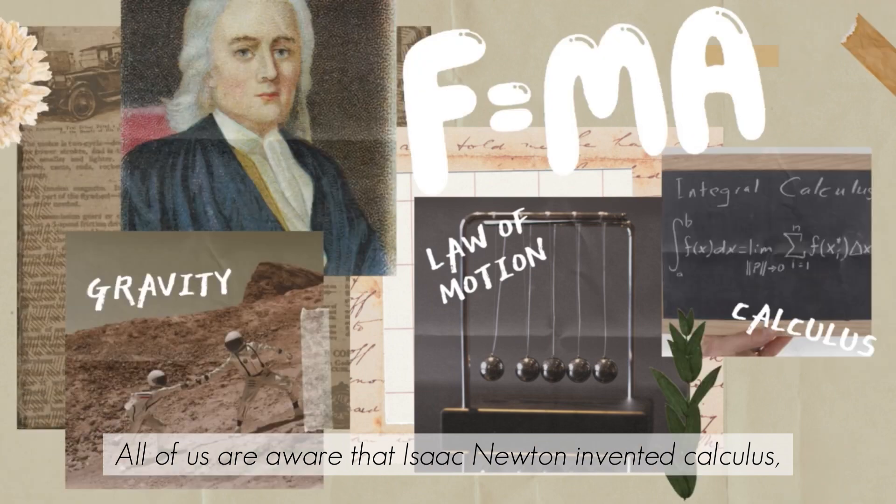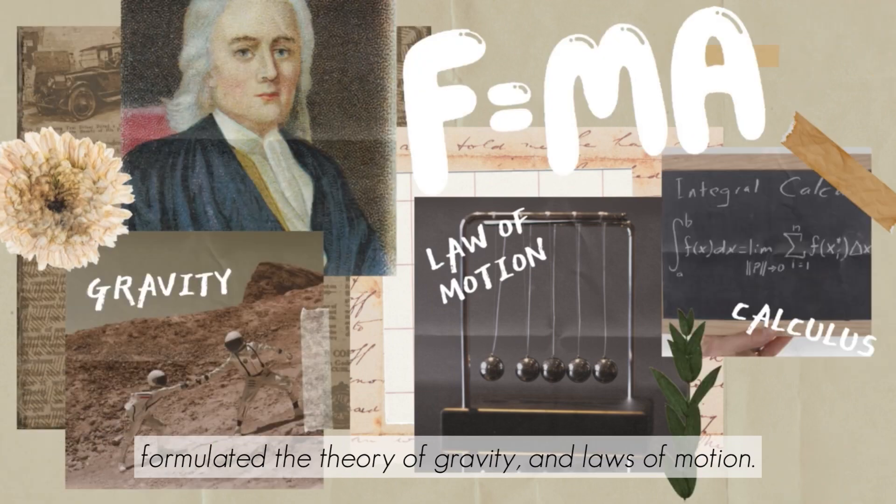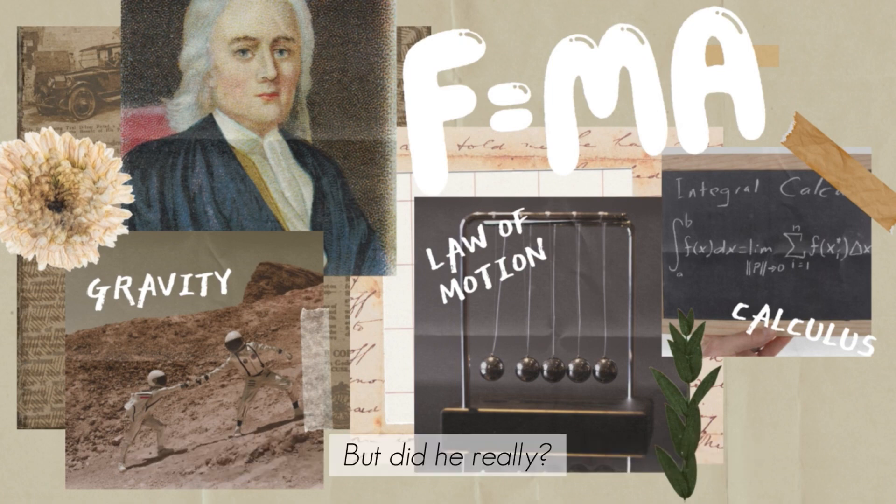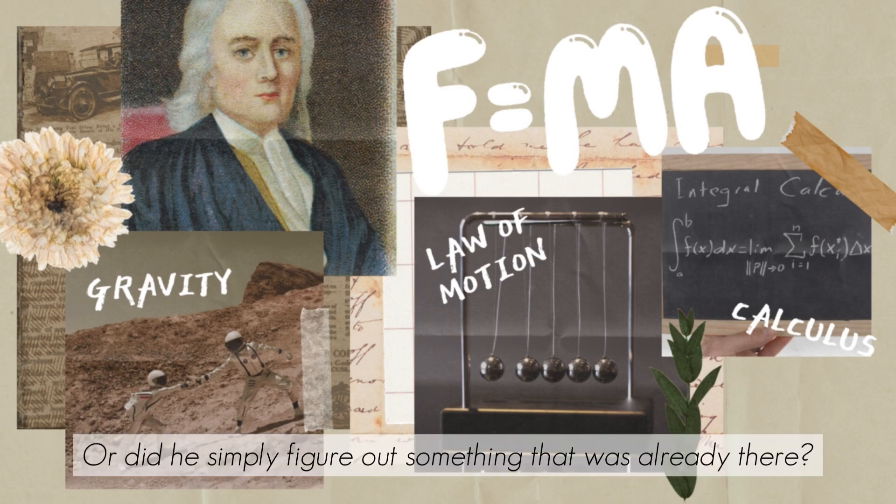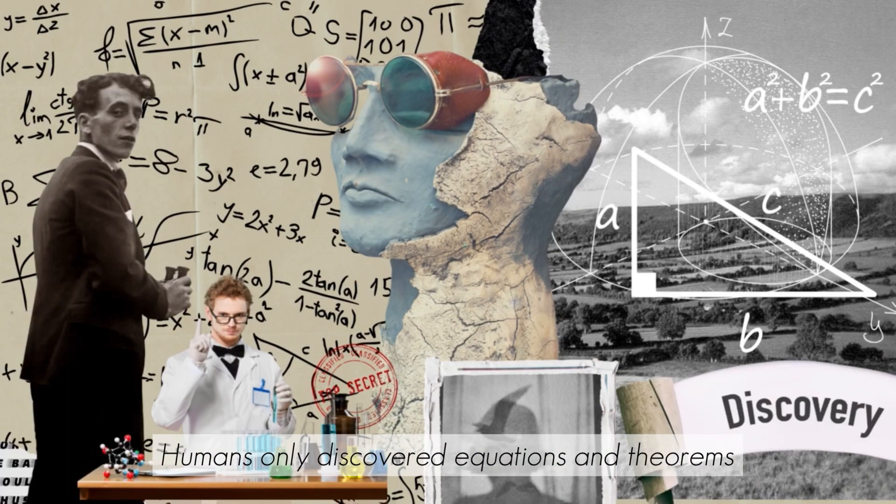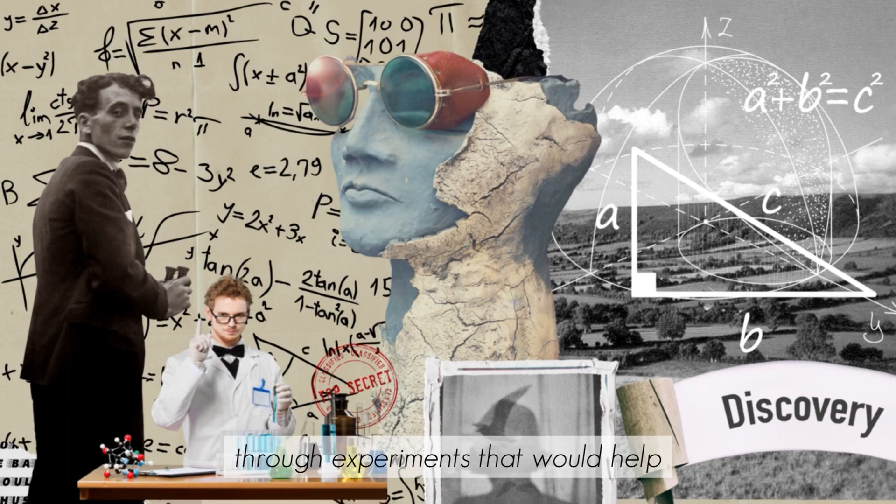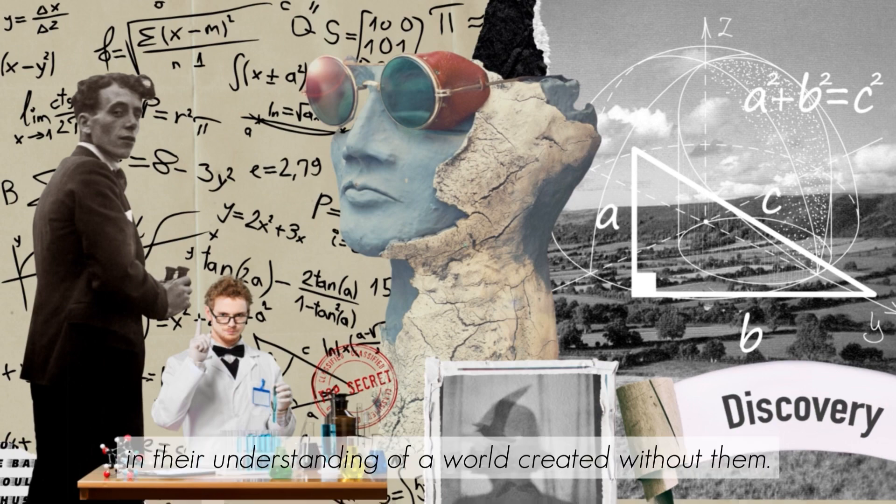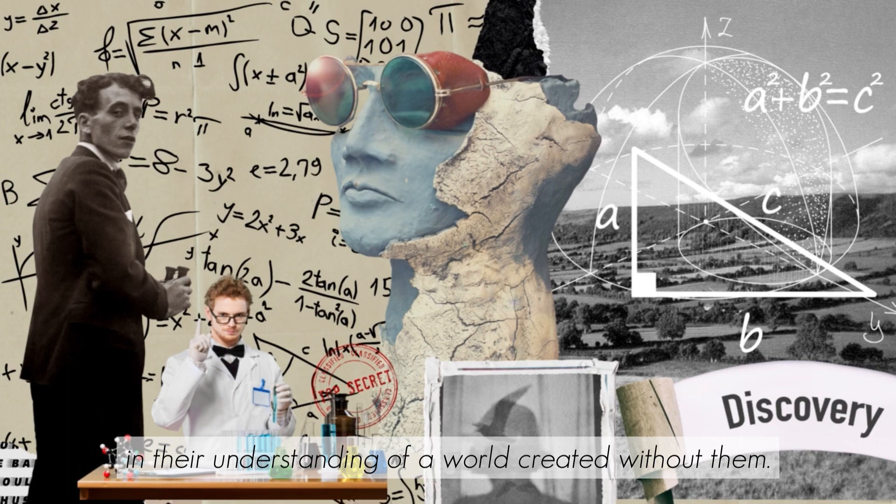All of us are aware that Isaac Newton invented calculus, formulated the theory of gravity, and laws of motion. But did he really? Or did he simply figure out something that was already there? Humans only discovered equations and theorems through experiments that would help in their understanding of a world created without them.